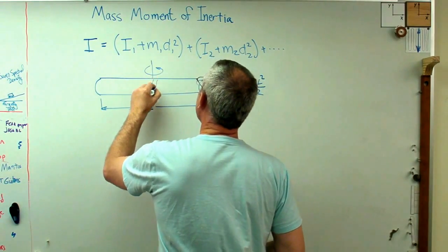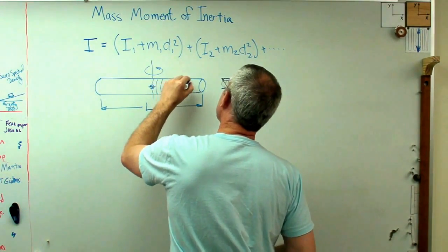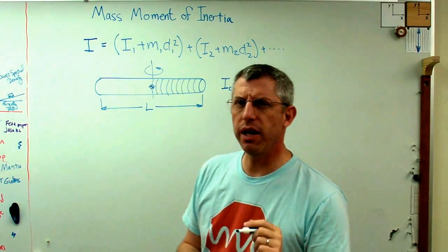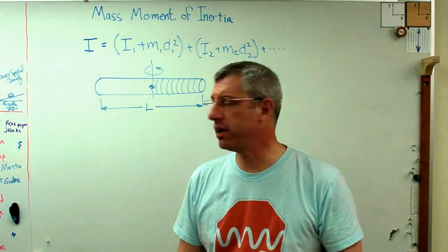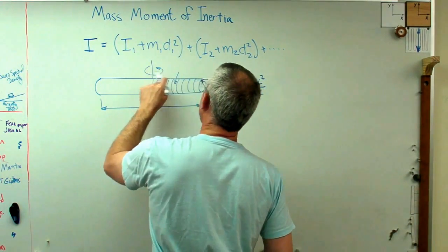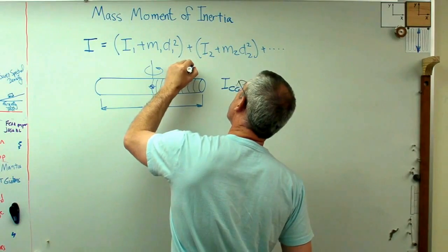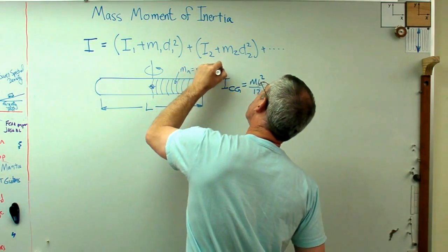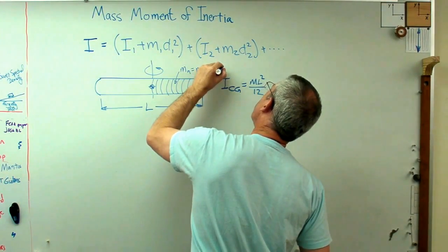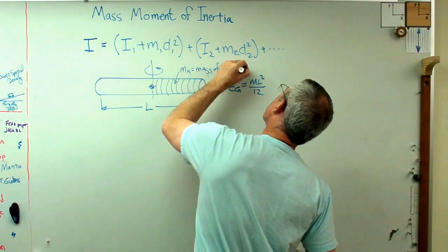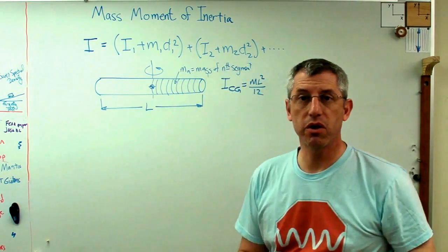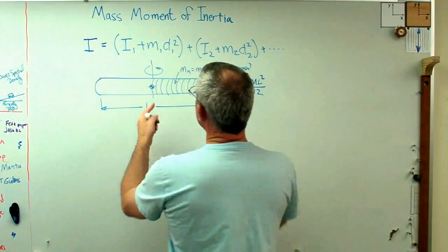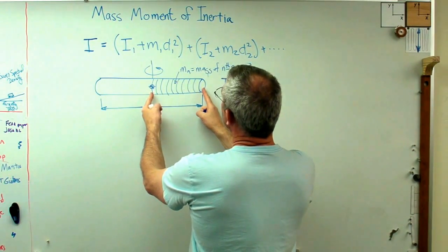What if I did it this way? What if I divided this bar up into lots and lots of little segments and started adding up the effect of all those little segments? That starts sounding an awful lot like calculus, doesn't it? What I would do is assume there are n segments here, and that's the mass of the nth segment. And I'm going to assume those segments are so small that their own mass moment of inertia is basically zero.